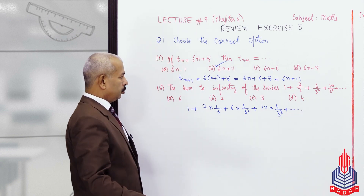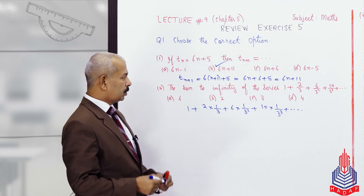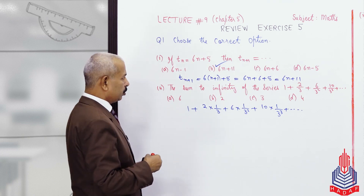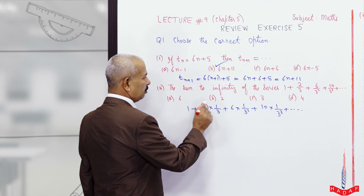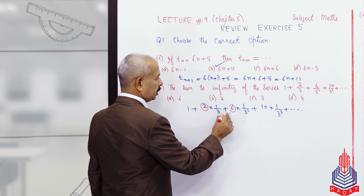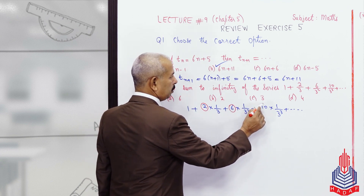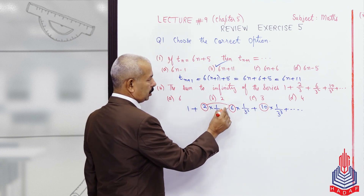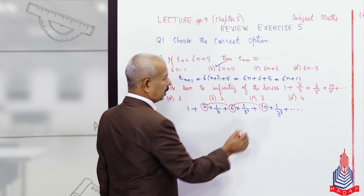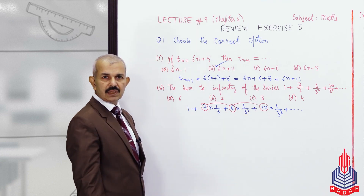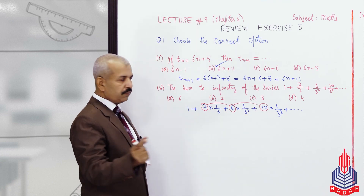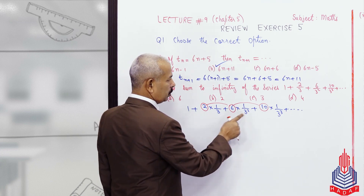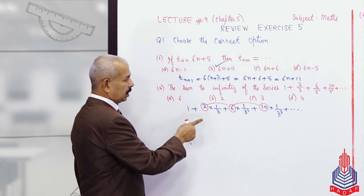Do you recognize this series? As I used to tell you during questions, the leading terms — 2, 6, 10 — form an arithmetic progression. The difference between them is 4. So these are arithmetic terms, and 1/3, 1/3², 1/3³ form a geometric progression.